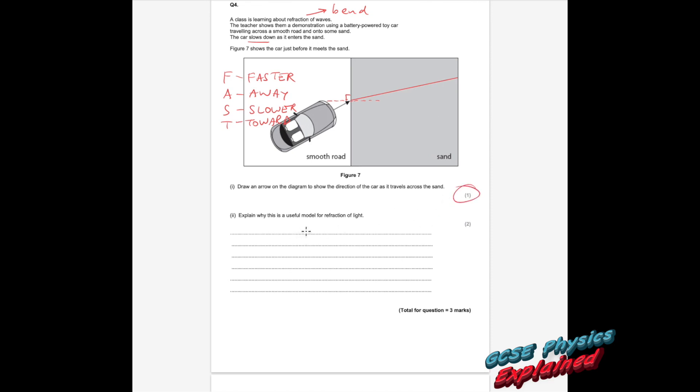Explain why this is a useful model for refraction of light. Well, light slows down when it enters a more dense material, and as it does, it bends toward the normal. And that's exactly what the car did. So the car behaves like light.